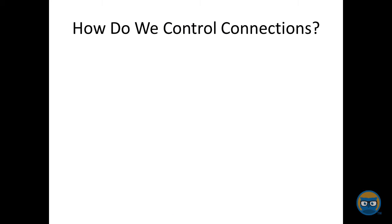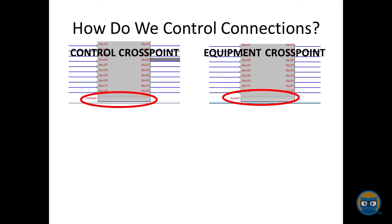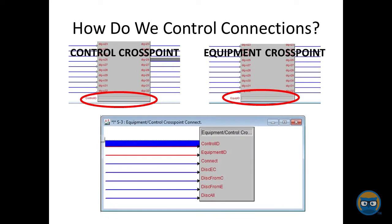Before we can pass any signals between a controller and an equipment, we have to manage connections between the two. Every control crosspoint has its own control ID and every equipment crosspoint has its own equipment ID, and these uniquely identify any equipment or control crosspoint in the entire program. To connect a controller to equipment, you put the control ID into the connector, you put the equipment ID into the connector, you pick how or if you want to disconnect any existing connections, and then finally you set the connect input high. A connection is made between the specified IDs once that connect input goes high.